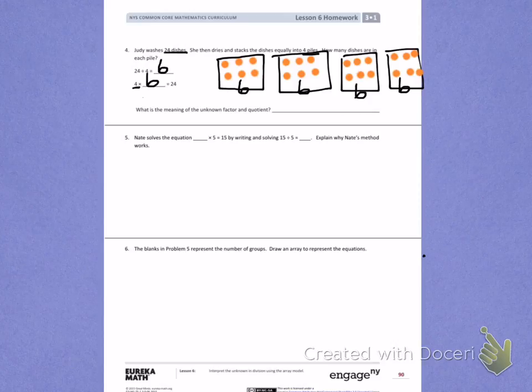What is the meaning of the unknown factor and quotient? So I'm being asked for what is the meaning of 6. In this problem, I knew the total was 24. I also knew the number of groups, 4. So my missing number, my missing factor and quotient, was the size.